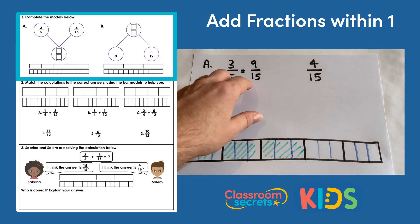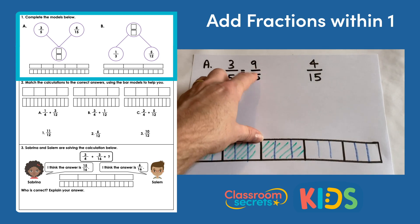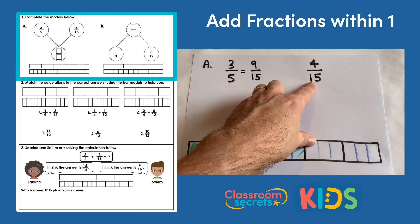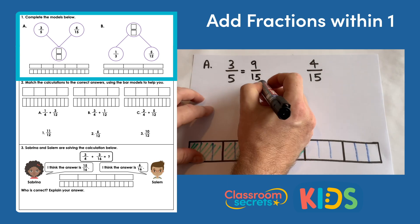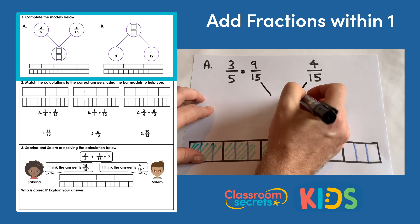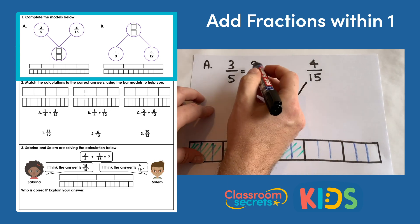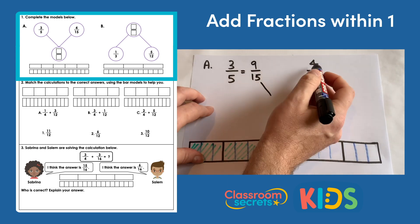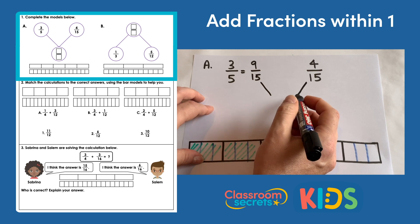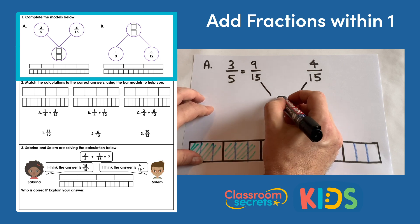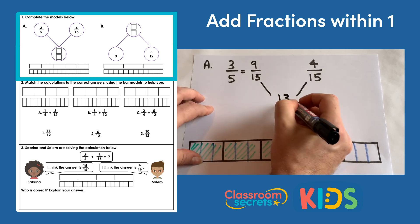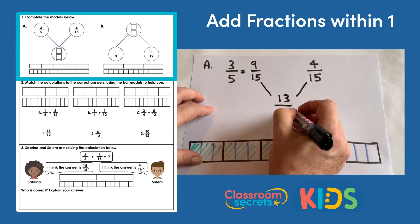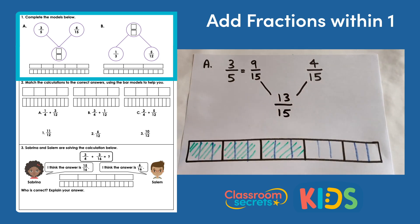And now we can add nine fifteenths and four fifteenths much more easily — they're both fifteenths. Nine fifteenths and four fifteenths would be thirteen fifteenths.